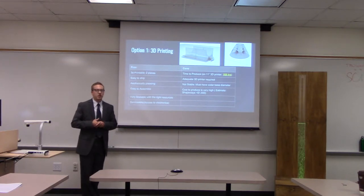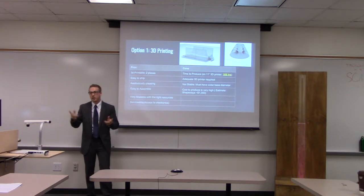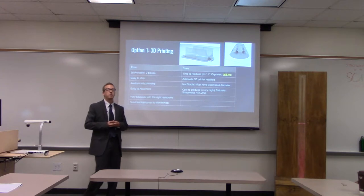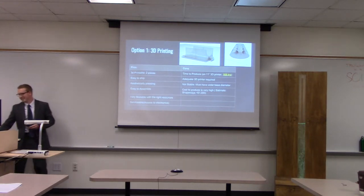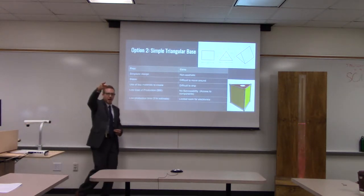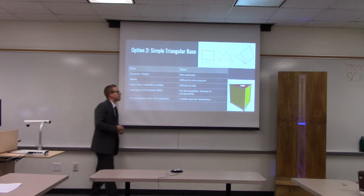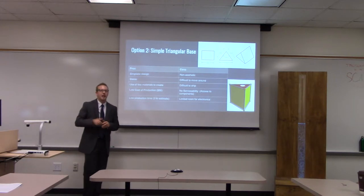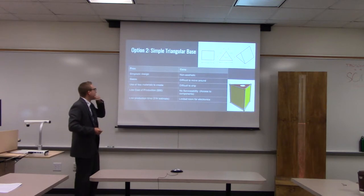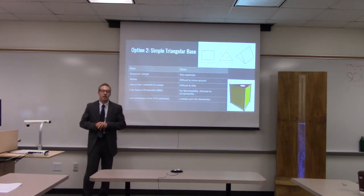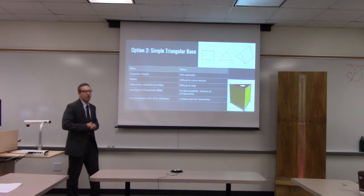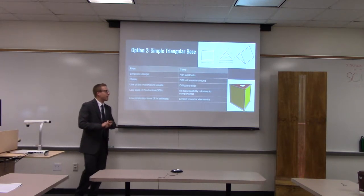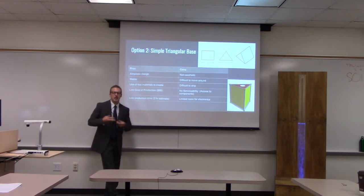So we looked into outsourcing the print job. By getting an estimate from an online 3D printing company called Shapeways, we sent them the CAD file and they gave an estimate of around $1,000, which was a bit out of budget for what we were looking to pay for a base. So with the help of sophomore Andrew Lowe, we came up with two additional designs. The first used the MVP tool by coming up with a very simple triangular prism design. It would be stable and the cost would be about $50, and the time to produce it would be three hours. However, we realized there would be no serviceability or access to the electronic components on the inside, and it would also be awkward or difficult to move.